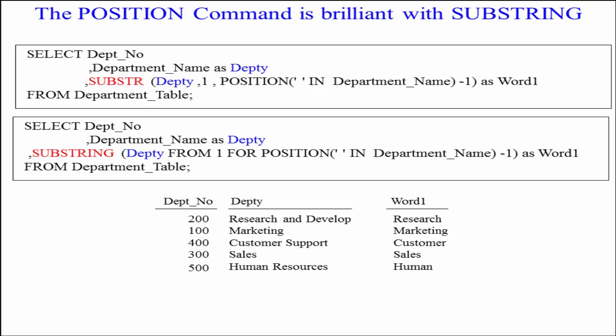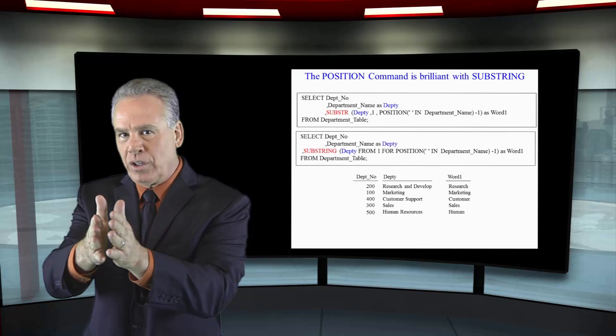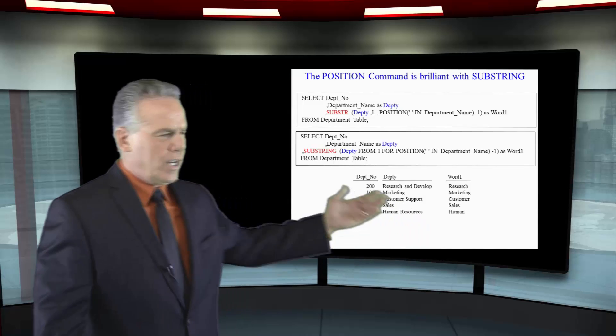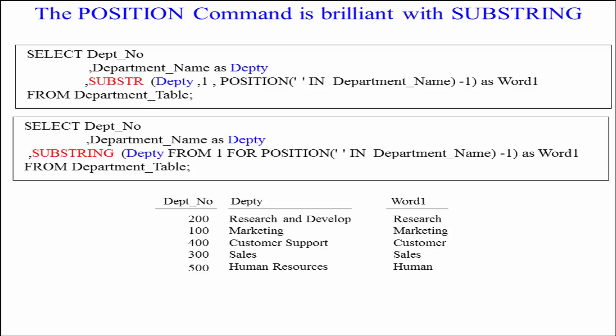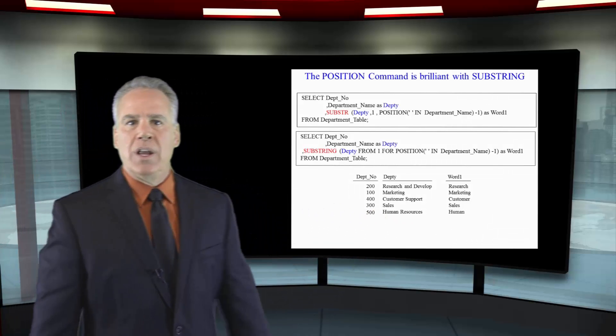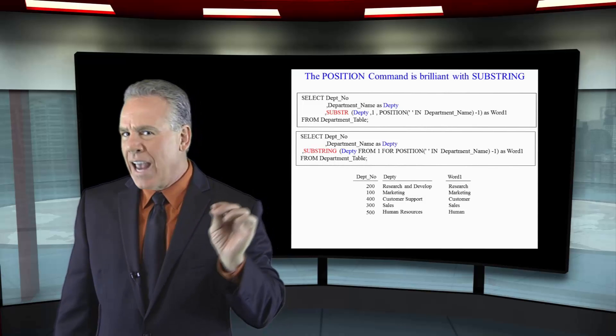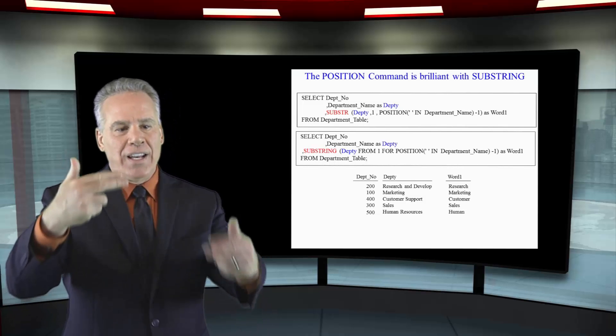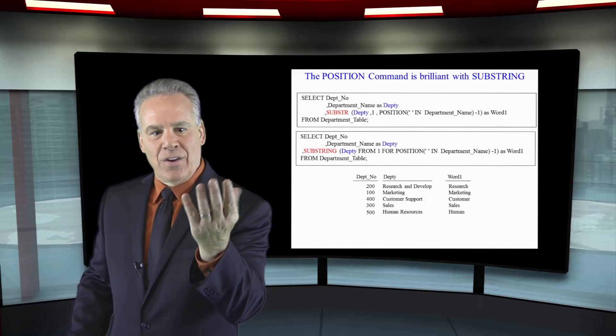We start from position one — the very first position — but how far should it go? For 'Research and Develop,' it goes to the position of the first space (between 'Research' and 'and'), then subtracts one, giving us only 'Research.' For 'Marketing,' it finds the space at the end and moves back to the G for the length. For 'Customer Support,' it starts at position one, finds the space, subtracts one, and returns 'Customer.' This lets you run subqueries on substring positions to determine the beginning or ending length.